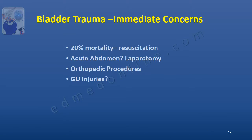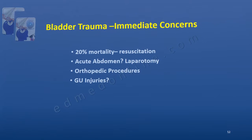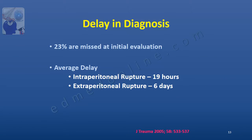Whenever a patient has trauma the immediate concern is resuscitation. There could be an indication for laparotomy for an acute abdomen, and there are multiple orthopedic injuries, hence it is not surprising that genitourinary injuries take a backseat. A study published in 2005 in the Journal of Trauma found that 23 percent of the times genitourinary injuries are missed, with an average delay in diagnosis of intraperitoneal rupture of about 19 hours, while the delay for extraperitoneal rupture could be as much as 6 days.